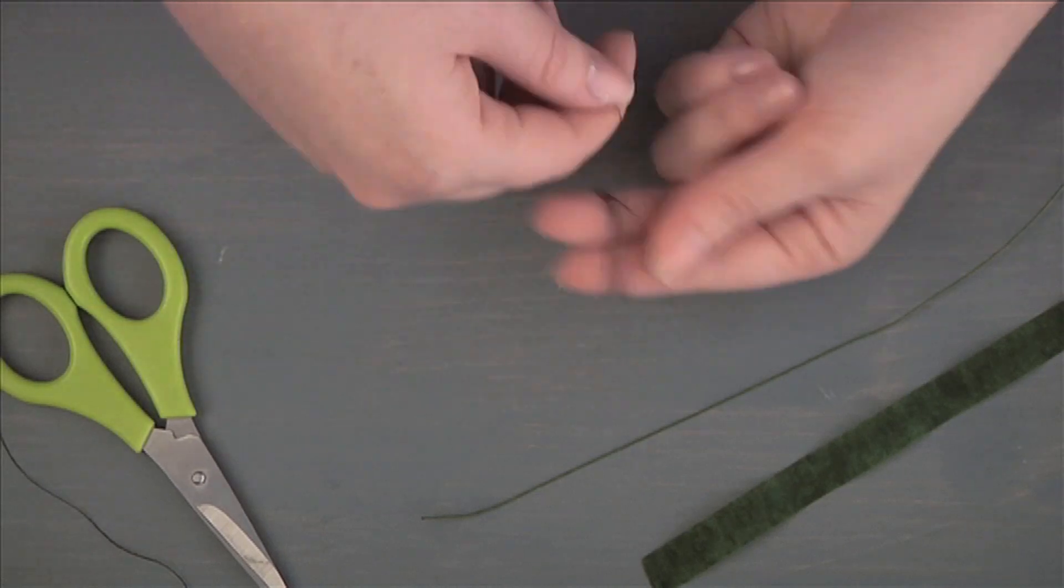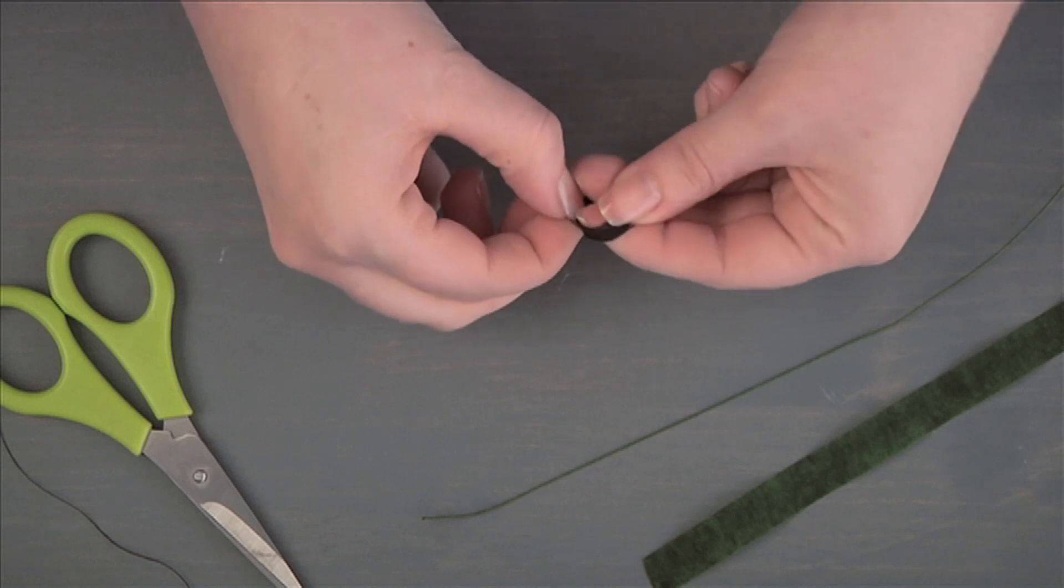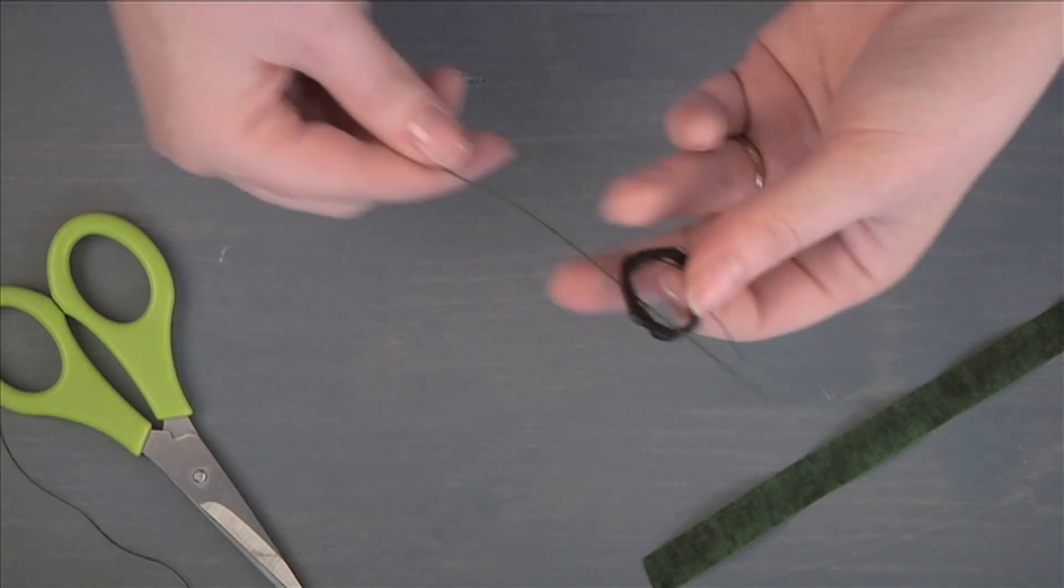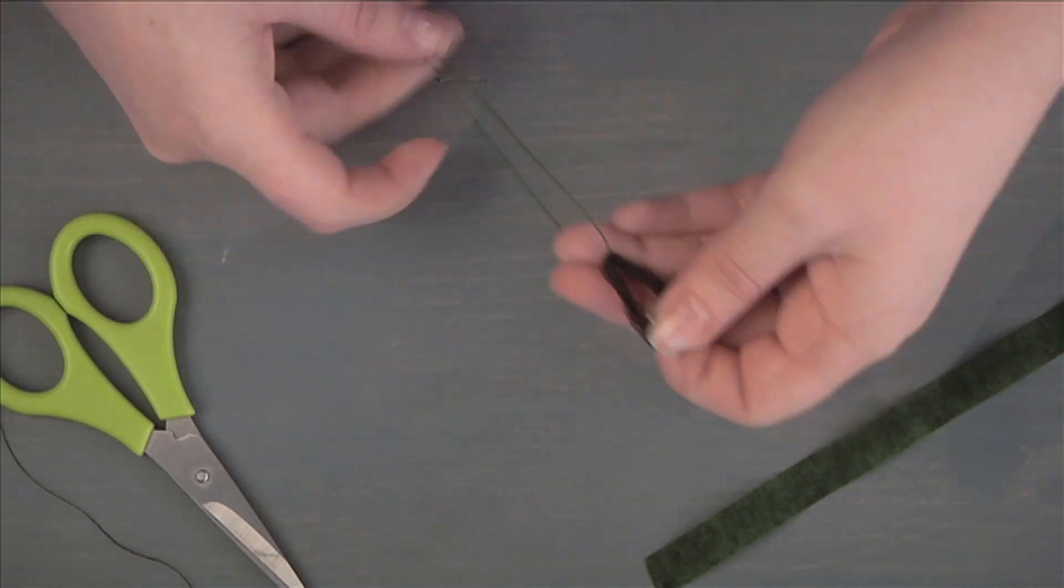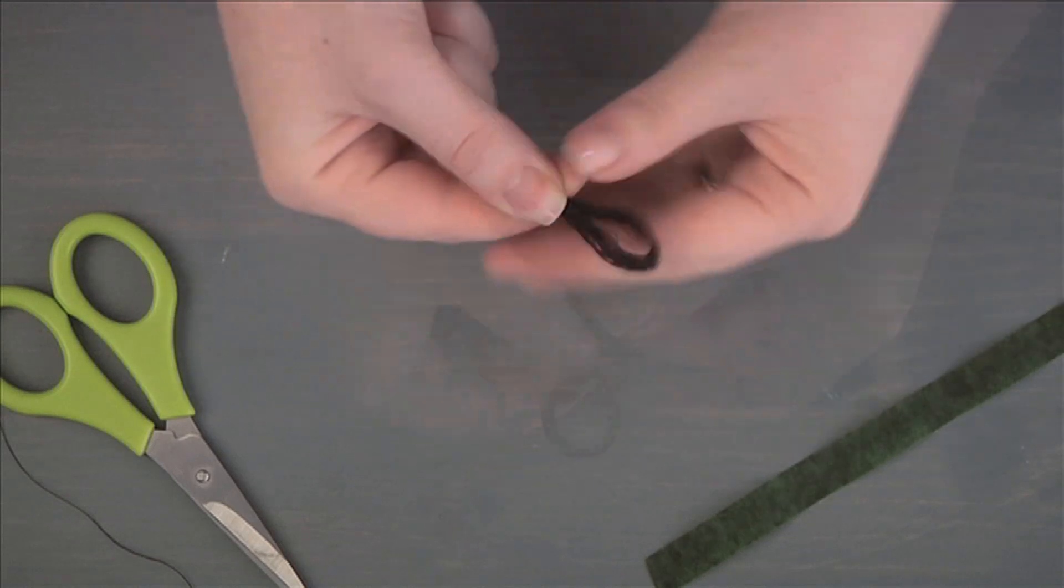To make stamens, wrap black cotton thread around two fingers 25 to 30 times. Remove from fingers and insert floral wire through the center. Fold wire in half and twist the loop and wire as tightly as possible, slightly overlapping the base of the loop.